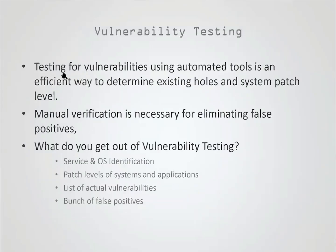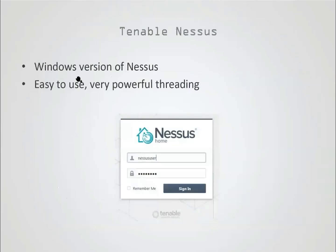With vulnerability testing, using automated tools is an efficient way to determine existing holes and system patch level. Manual verification can be necessary for eliminating false positives. What you get out of vulnerability testing is service and OS identification information, patch level, some vulnerabilities, and a lot of false positives. Some vulnerability reports are mostly false positives, and your expertise comes in being able to isolate out the false positives and show just the actual vulnerabilities.